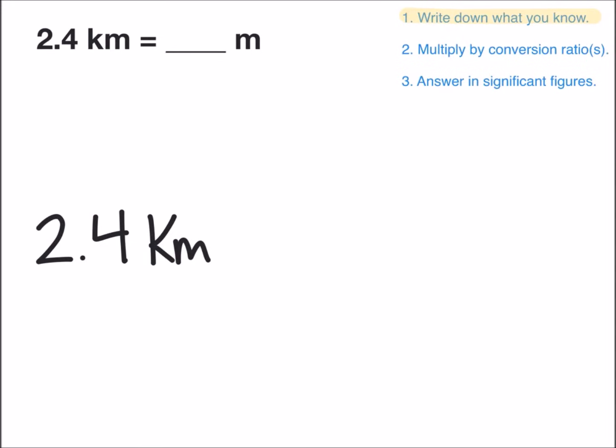And the second step asks us to multiply by the conversion ratio. In order to do that, my conversion ratio is going to be 1,000 meters equals 1 kilometer. And for the factor label method, what I'm going to do to get started is I'm always going to begin by making a horizontal line. And that's going to separate the items or the terms in the numerator from the denominator. And every time I go ahead and multiply or divide by a term, I'm going to put a vertical line to separate those terms.